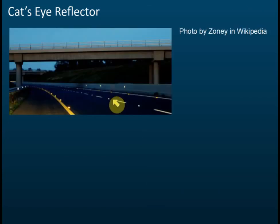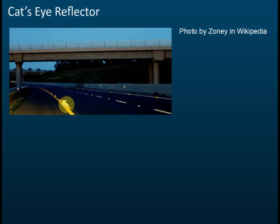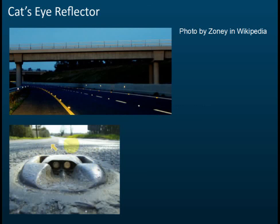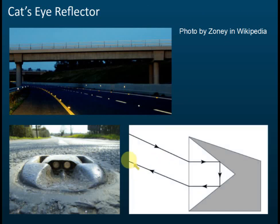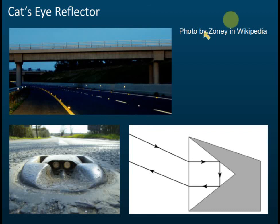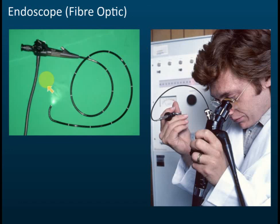The cat's eye reflector is another application. Sometimes on the road you can see this reflector — it looks like it emits light, but actually it doesn't. The light actually comes from the headlamps of the car, and this device just reflects the light. That's why we call it the cat's eye reflector. The light from your headlamps goes inside, gets refracted, hits the reflector, and is reflected back. It is usually found on road dividers.